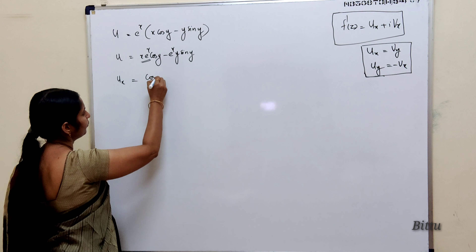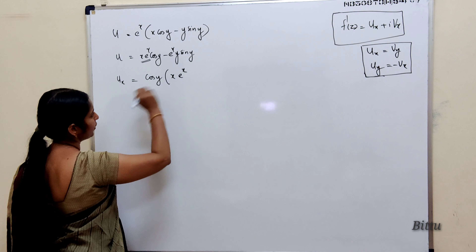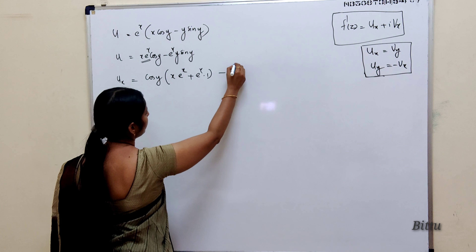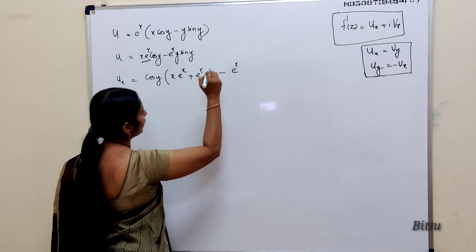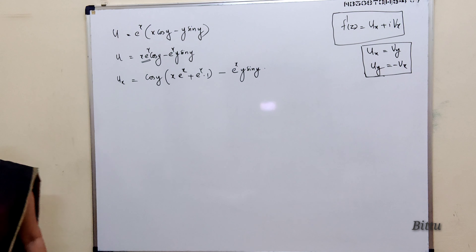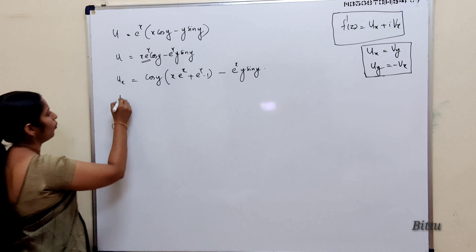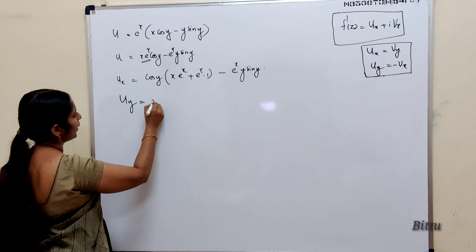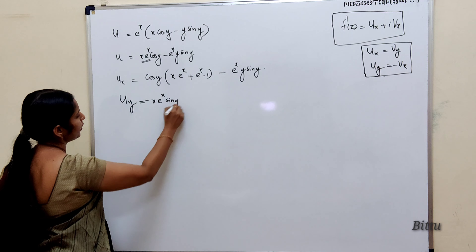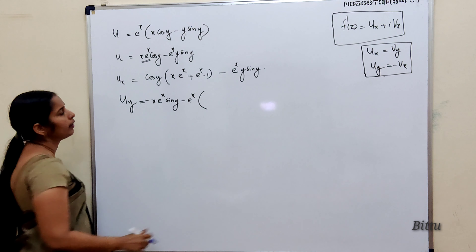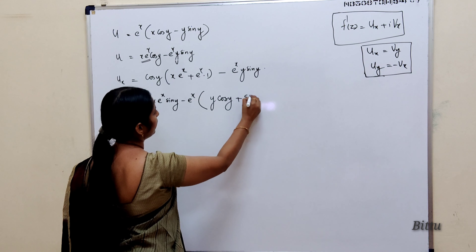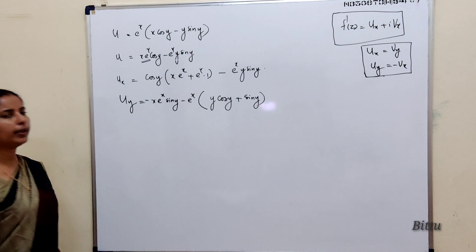cos(y) is a constant. Applying the product rule to x·e^x: first × derivative of second + second × derivative of first. For ∂u/∂y: in the first term, x·e^x is a constant; derivative of cos(y) is −sin(y). For the second term, e^x is a constant and y·sin(y) is a product, so apply the product rule: first × derivative of second + second × derivative of first.